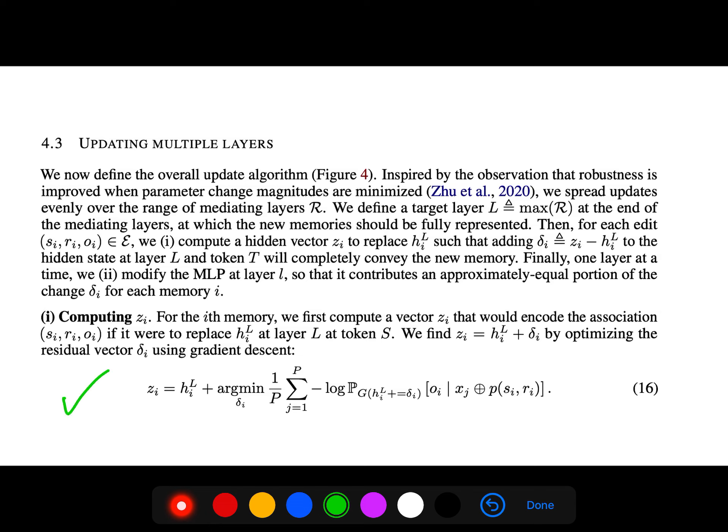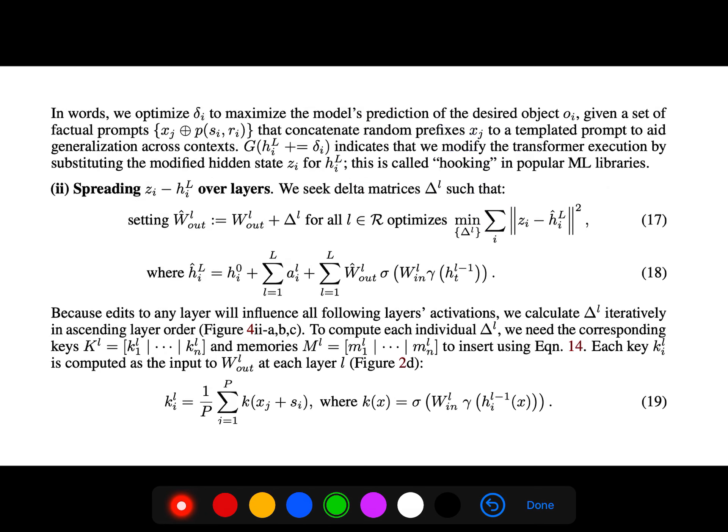We compute z_i, which is defined here. We find that by optimizing the residual vector Δ_i using gradient descent, you get the answer. In words, we optimize Δ_i to maximize the model's prediction of the desired object given a set of factual prompts. We seek Δ matrices such that this holds. Because edits to any layer will influence all following layer activations, we calculate Δ iteratively in ascending layer order.